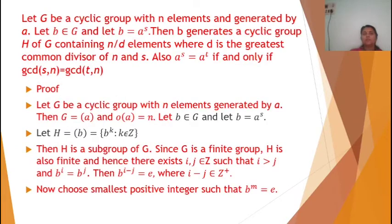Now we have a new theorem: let G be a cyclic group with n elements generated by a, and let b be an element of G with b equal to a raised to s. Then b generates a cyclic subgroup H of G containing n/d elements, where d is the GCD of n and s. Also, a raised to s equals a raised to t if and only if GCD(s, n) equals GCD(t, n).